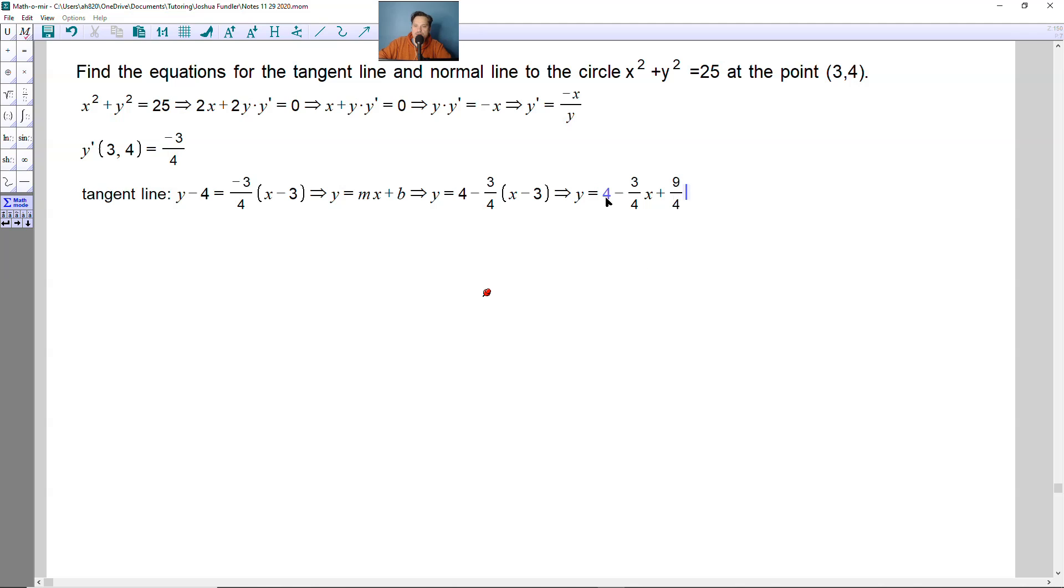Then what you want to do is take this 4 here and write it as 16 fourths so you can add it with the 9 fourths easily. So continuing, you're going to have that y equals 16 fourths minus 3 fourths x plus 9 fourths, and then you just combine the two fractions.